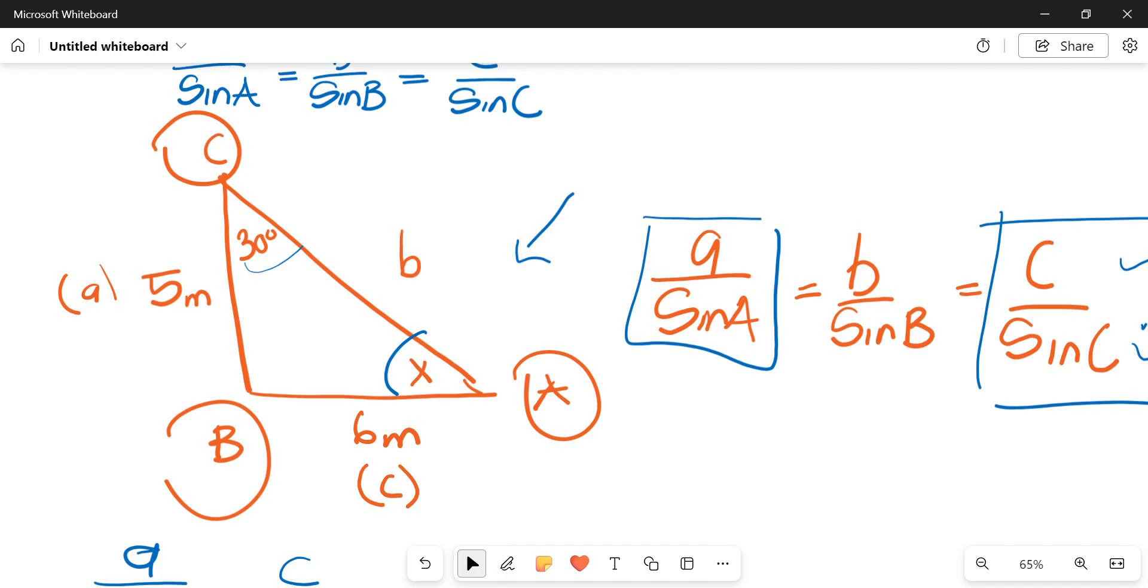We are going to consider this diagram on screen here. As you can see, we have sides A, B, and C. Well, corners or angles A, B, and C. And then we have lengths or sides A, B, and C as well.